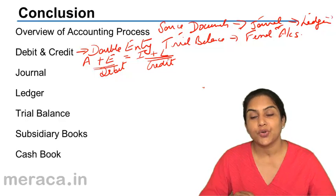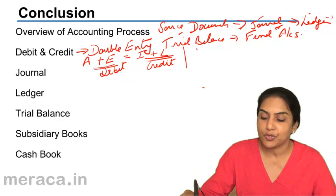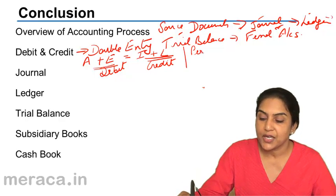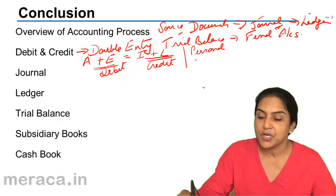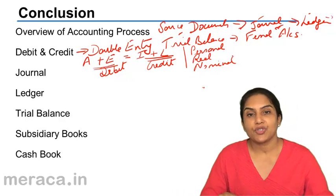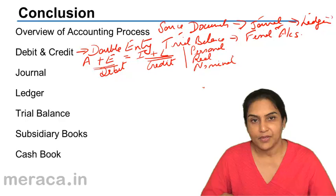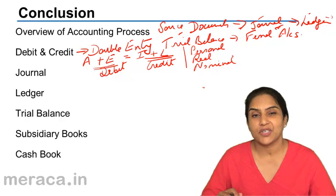On the other hand, we also had a traditional approach. What did the traditional approach say? Traditional approach said accounts are of three types: personal accounts, real accounts, and nominal accounts. Personal accounts dealt with people accounts, whether individuals, whether natural persons, artificial persons, or even representative personal.